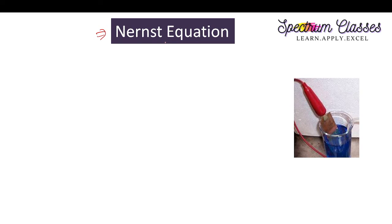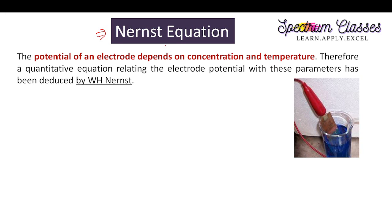So let's start with the Nernst equation. This is a very simple derivation and within two or three steps you can understand it. But before that, you must understand the terminology used in this equation, because it is very important to understand the electrochemistry and the terminology used in the Nernst equation relationship. The Nernst equation is the relationship between electrode potential, concentration of the solution, and temperature of the system.